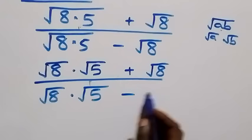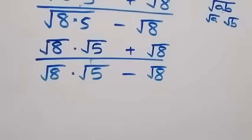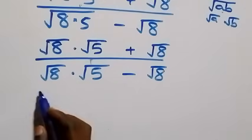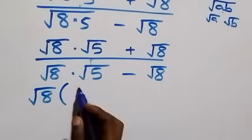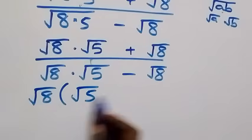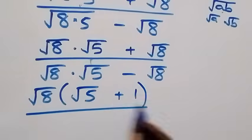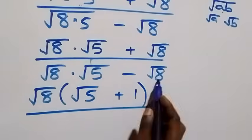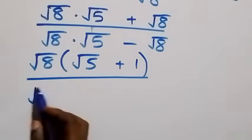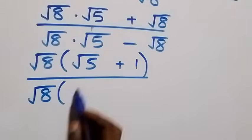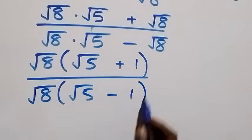Minus root eight. Now root eight is common in the numerator, so we factor it out into brackets, and we are left with root five plus one. In the denominator, root eight is also common, and when we factor it out we are left with root five minus one inside the bracket.